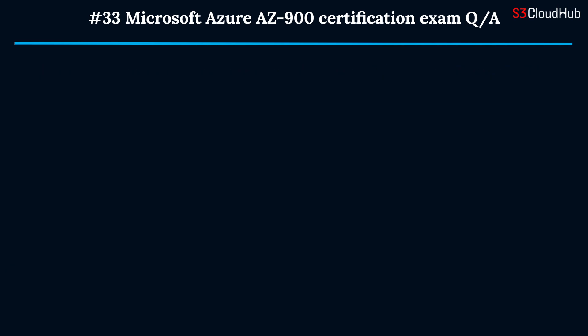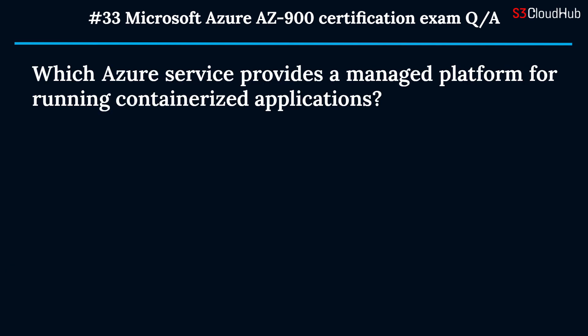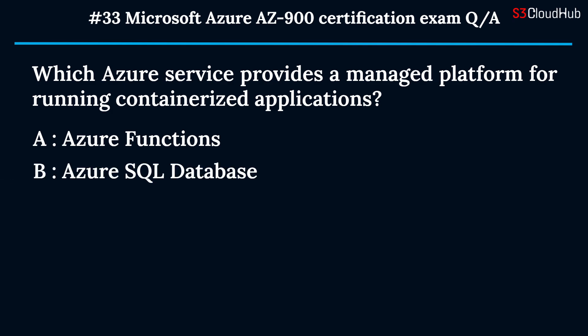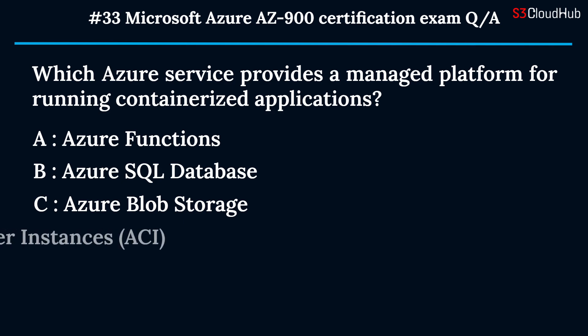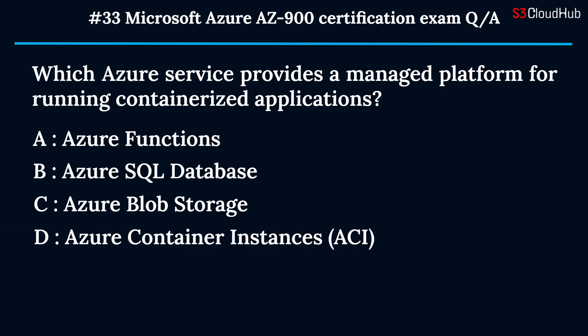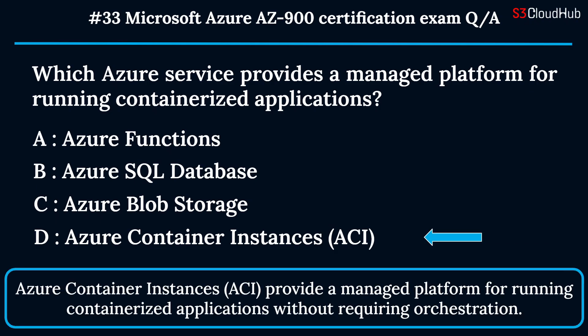The thirty-third question: which Azure service provides a managed platform for running containerized applications? Option A: Azure Functions. Option B: Azure SQL Database. Option C: Azure Blob Storage. Option D: Azure Container Instances (ACI). The correct answer is option D. Azure Container Instances (ACI) provide a managed platform for running containerized applications without requiring orchestration.